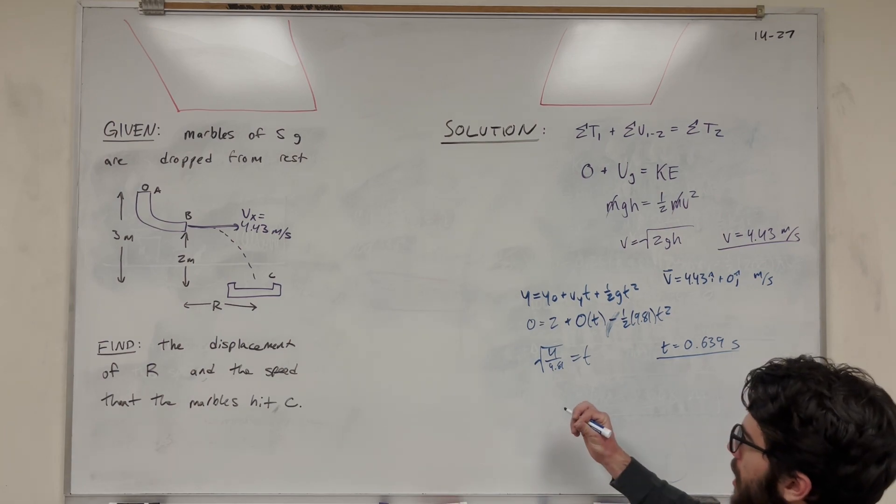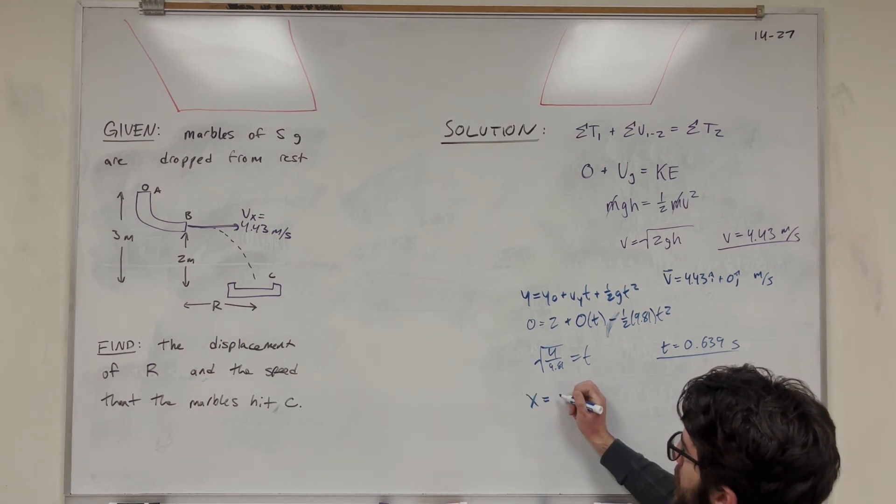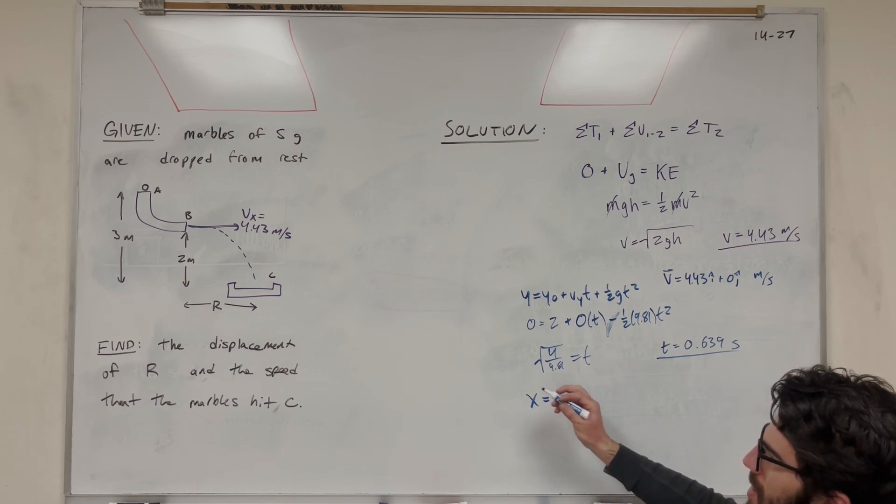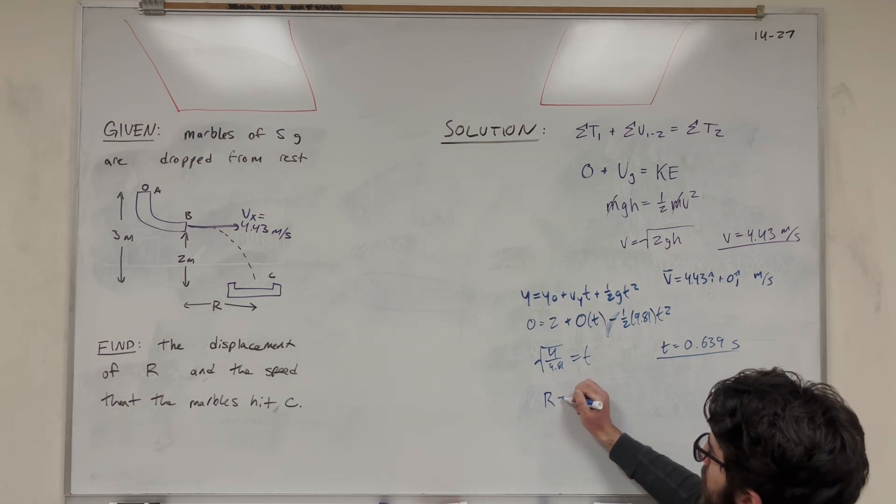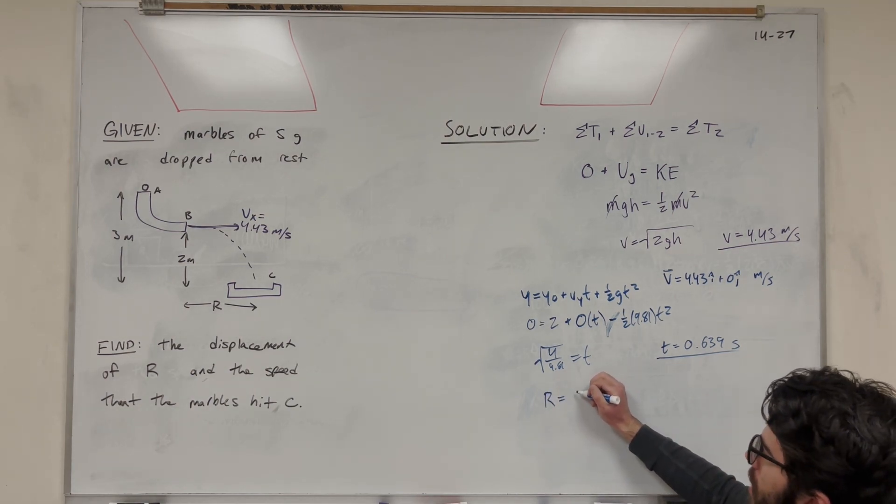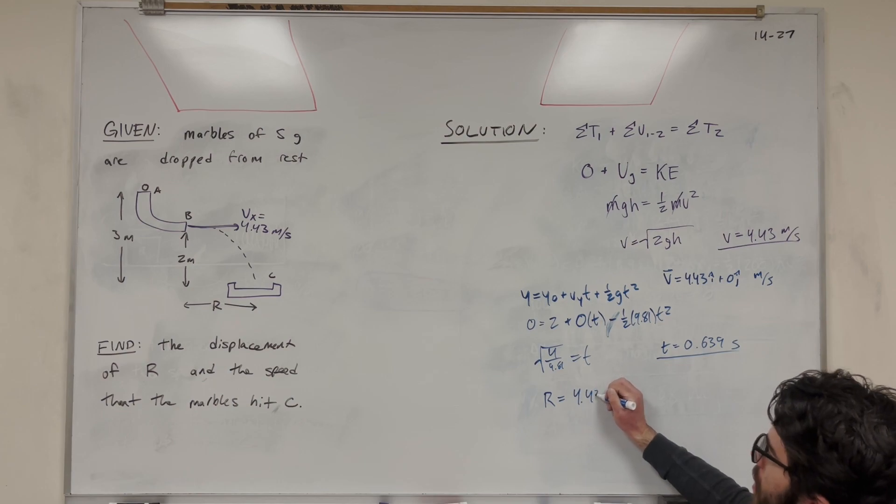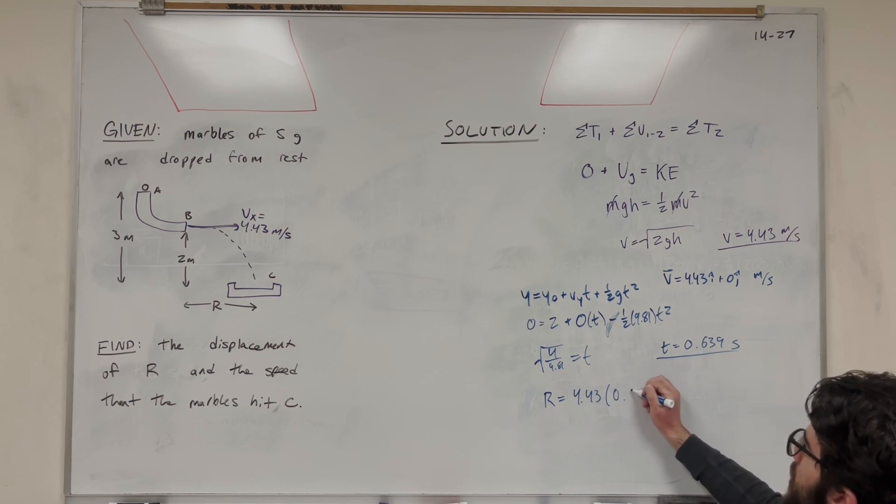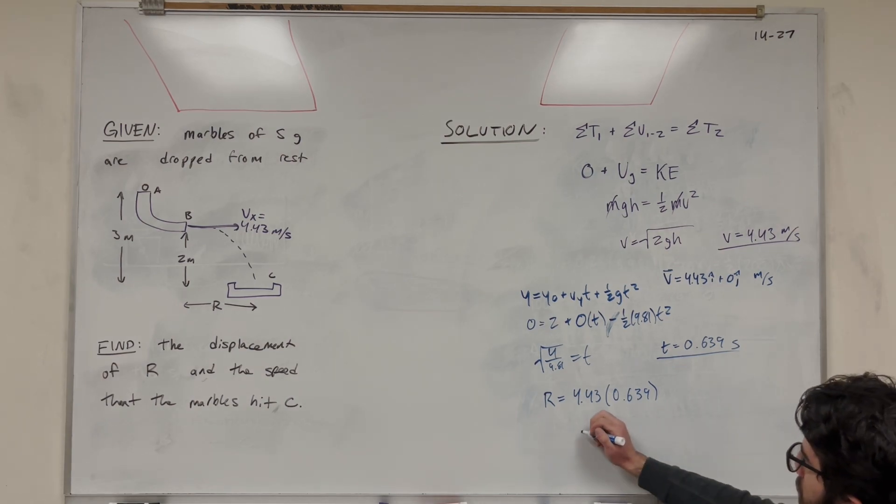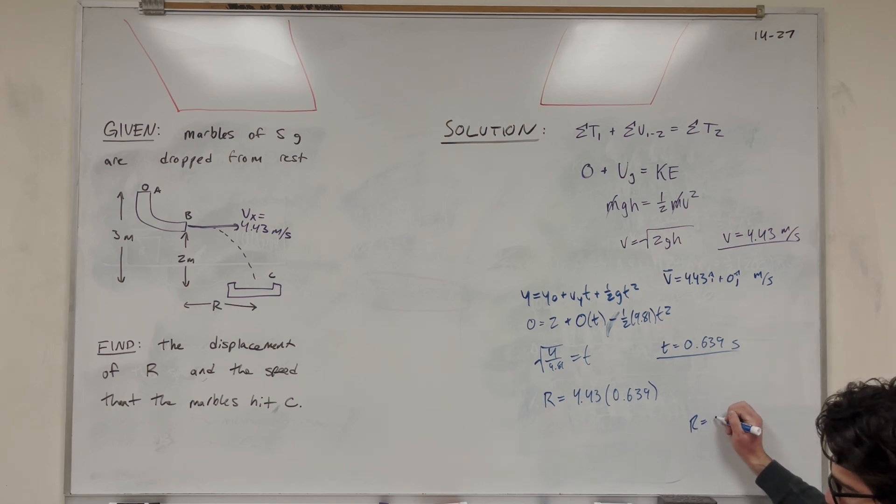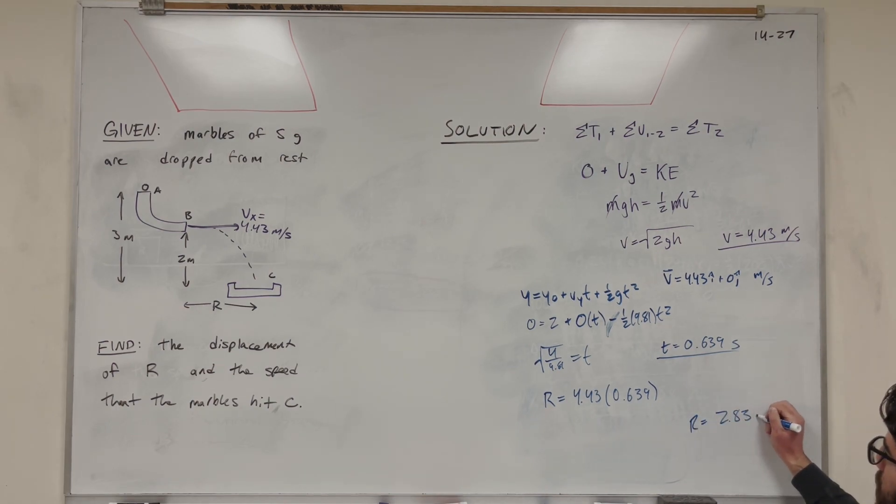So now we can just look in the x direction. We know that x is equal to x initial, which we're going to take that to be 0 because R is just that distance. In fact, we can just label this R because the distance traveled. So it's going to be velocity in the x direction, 4.43, multiplied by the time it takes, 0.639. And there's no acceleration in the x direction, so this is our final equation. You're going to get that R is equal to 2.83 meters.